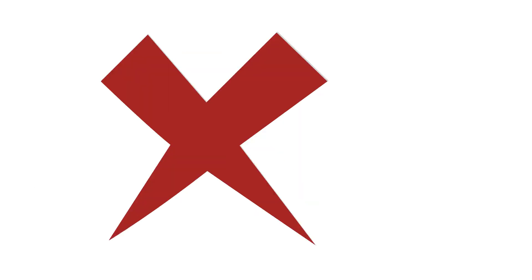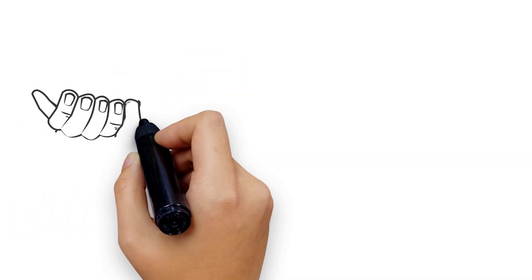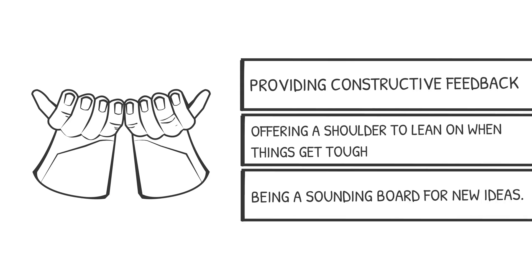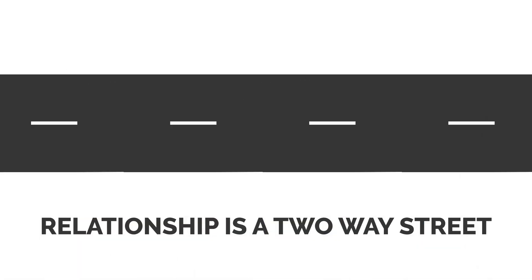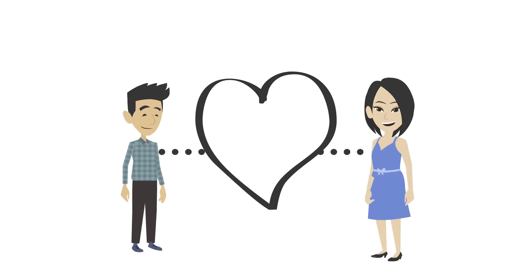Being each other's cheerleader doesn't mean blindly agreeing with everything your partner says or does. It means providing constructive feedback, offering a shoulder to lean on when things get tough, and being a sounding board for new ideas. Encourage your partner to take risks and pursue their passions, and celebrate their successes along the way. Remember that a relationship is a two-way street, and supporting each other's goals and dreams can strengthen your bond and bring you closer together.